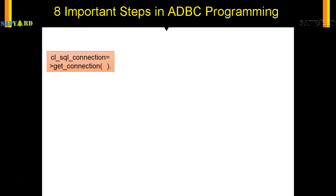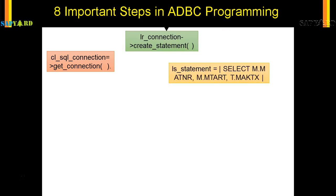We use cl_sql_connection get_connection to get the connection to the database. Then we use create_statement to instantiate the SQL statement. Then we prepare the native SQL statements — in this case it is written like select m.matner and select t.mktxt. These SQL queries are concatenated and saved in a variable called ls_statement.